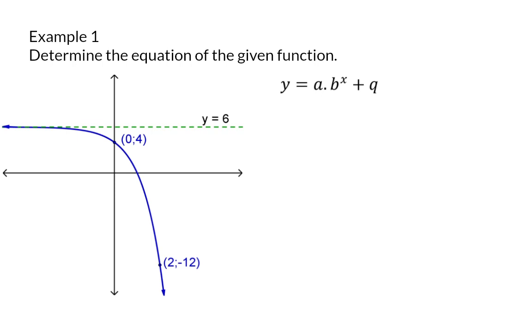And just like when we sketched an exponential function, we start off with the asymptote. In this case, that is given as y equals 6, which means that q equals 6.